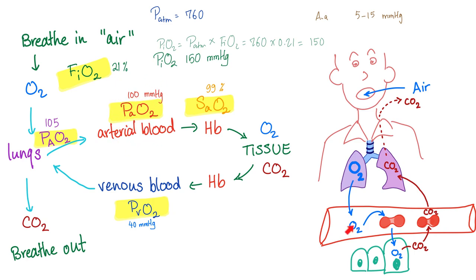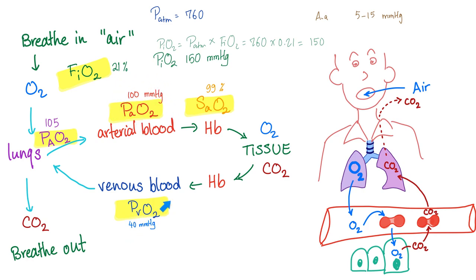This oxygen at 100 mmHg decides to jump onto the hemoglobin. Your hemoglobin is like a car with four seats — when all four seats are occupied with oxygen, your hemoglobin is fully saturated, about 99%, which is excellent. The oxygen is then given to the cells for cellular respiration, and what remains in the venous blood is PvO₂ — the oxygen in the vein — which is about 40 mmHg, compared to 100 in the artery.